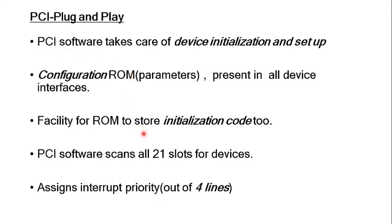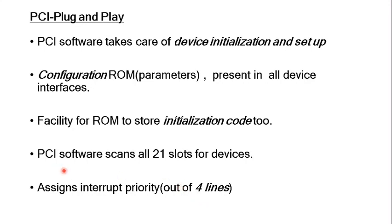A single PCI bridge can scan or initialize 21 devices that support the PCI protocol. For a higher number of PCI devices, we need to have PCI-to-PCI bridges, and the hierarchy extends accordingly. That is one of the major limitations of normal PCI — it needs to be extended at the bridge level. Also, in PCI there is a 4-level interrupt scheme, meaning 4 lines are assigned for interrupt processing.